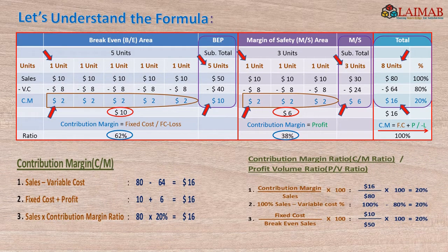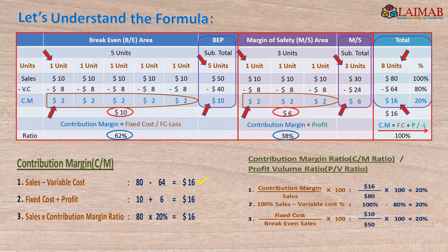Let's understand the formulas. First, contribution margin — there are three formulas. First: total sales $80 minus total variable cost $64 equals contribution margin of $16. Second: total fixed cost $10 plus total profit $6 equals contribution margin of $16 again. Third: 20% of total sales of $80 also creates contribution margin of $16.